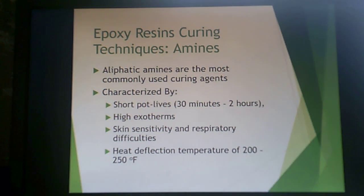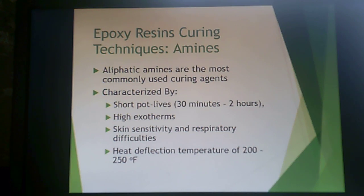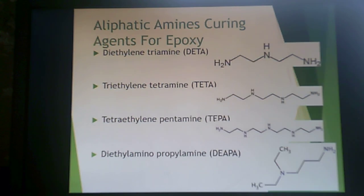Aliphatic amines are the most commonly used curing agent, and these are characterized by short pot lives — 30 minutes to 2 hours — and high exotherms. Aliphatic amines can create skin sensitivity and respiratory difficulties, but they result in a heat deflection temperature of the epoxy of 200 to 250°F. These are secondary amines, not tertiary, and that's why they become part of the 3D network.